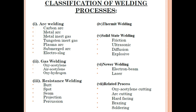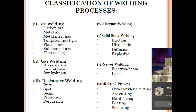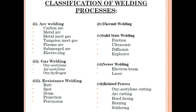There are many classification of welding processes. Arc welding includes carbon arc, MIG (metal inert gas), TIG (tungsten inert gas), plasma arc, submerged arc, and electroslag welding. Gas welding includes oxy-acetylene, air-acetylene, and oxy-hydrogen. Resistance welding includes bar, spot, seam, projection, and percussion welding. Today we will focus on SMAW — shielded metal arc welding — and the defects that occur with it.